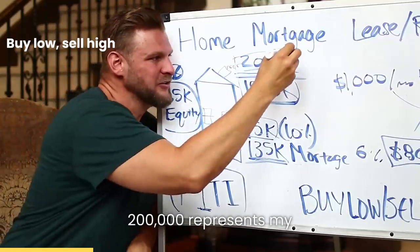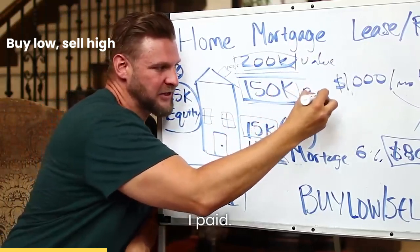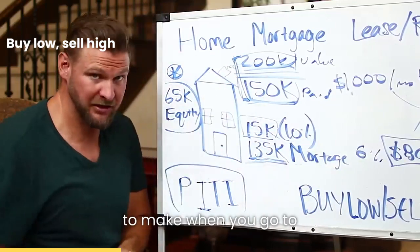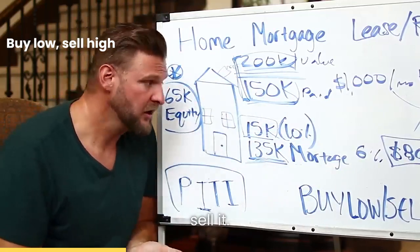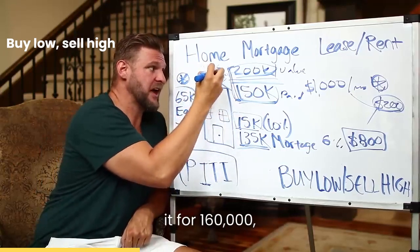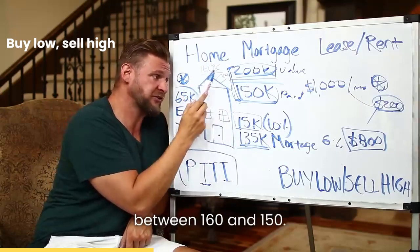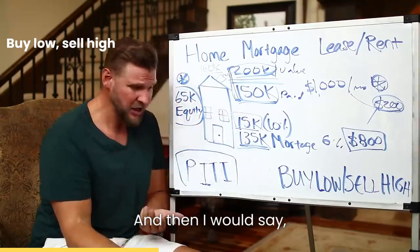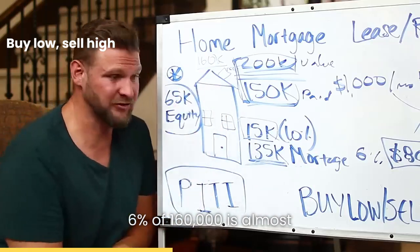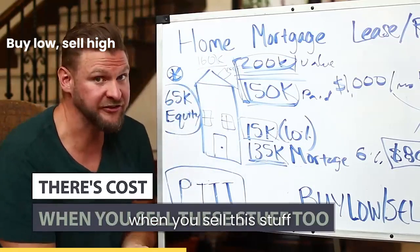For example, $200,000 represents my value, $150,000 represents what I paid. I did put some money down but leaving that out of it, there's $50,000 of profit to make. When you go to sell it, if you were wrong on your margin and you could only sell it for $160,000, there's still at least a $10,000 difference — but what about realtor fees that are 6%? 6% of $160,000 is almost $10,000, so that's now wiped out because there's cost when you sell this stuff too.